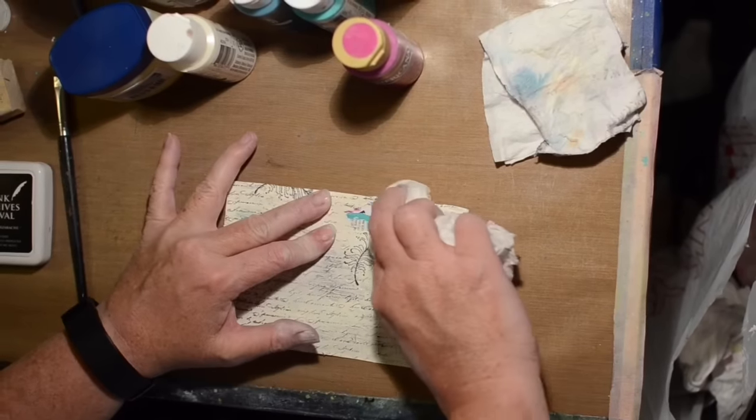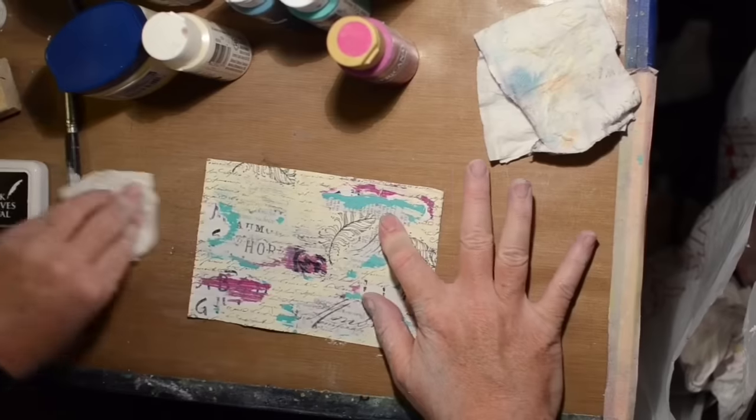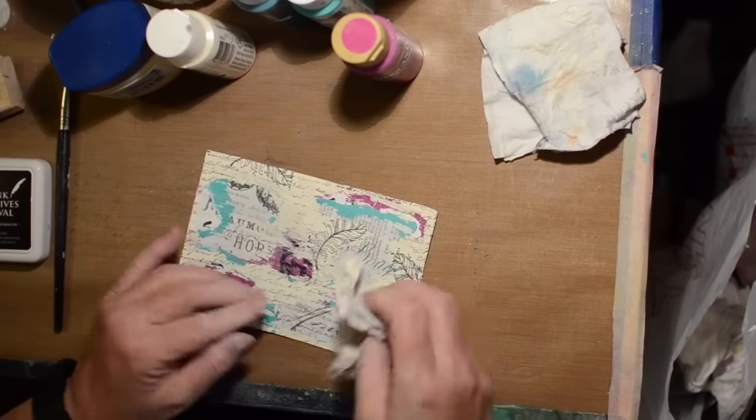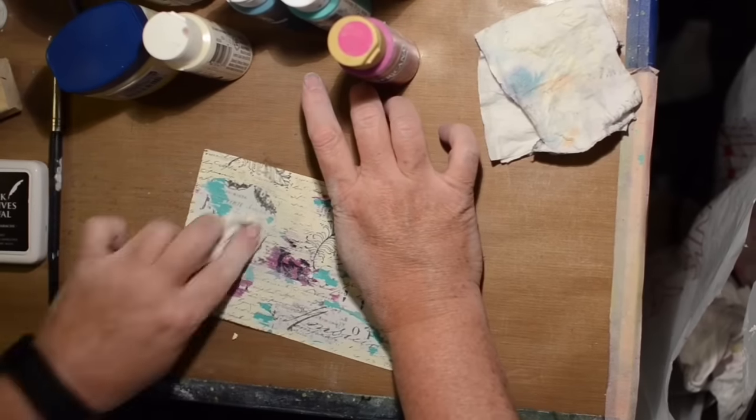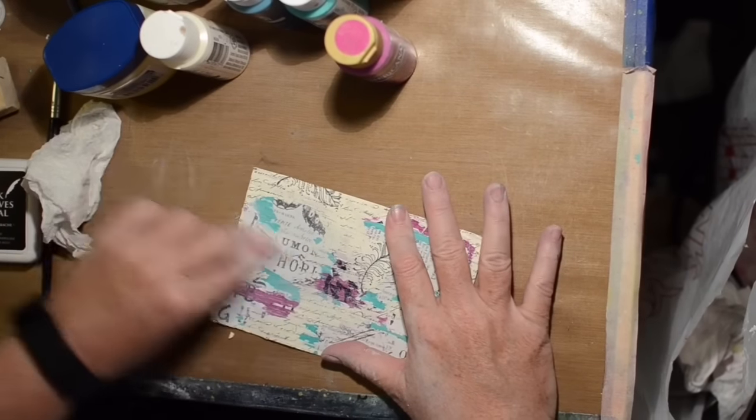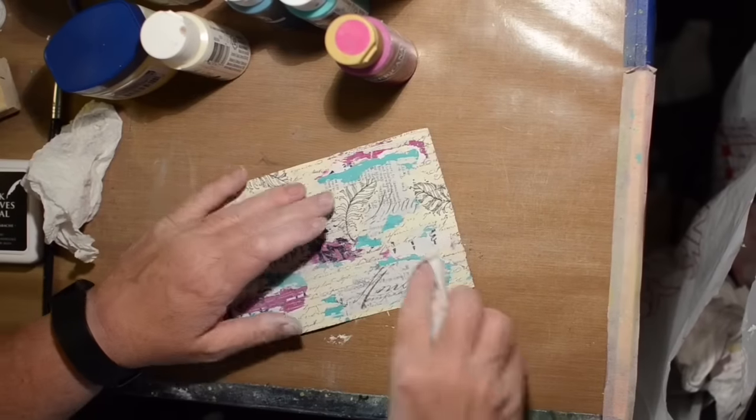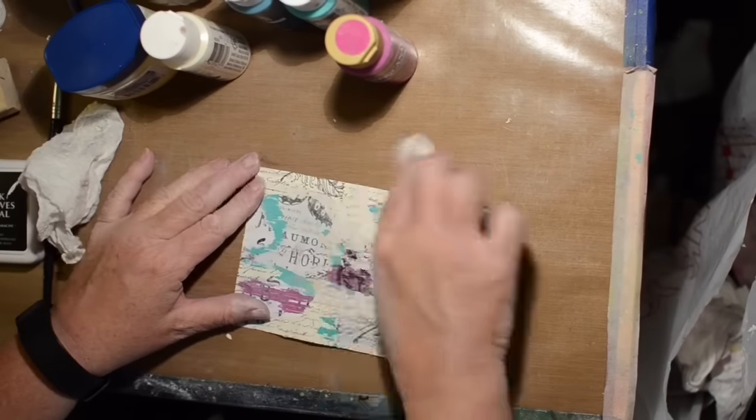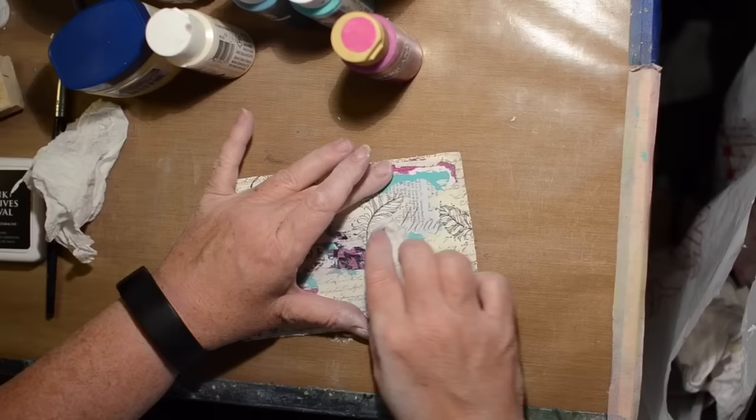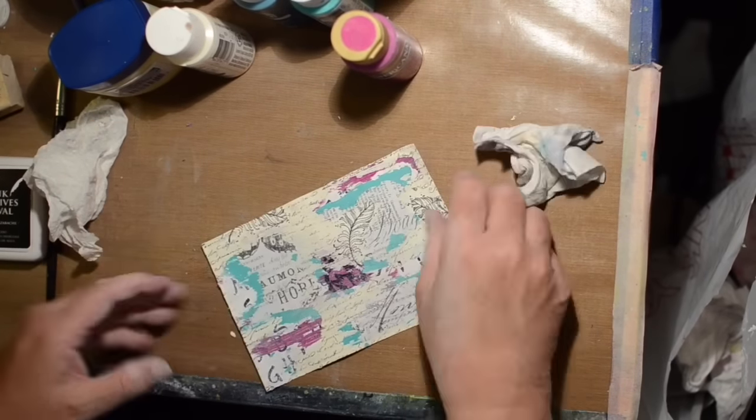Now, once it's dry, we'll rub it off. And that is Ranger's Archival Ink, by the way, that I'm stamping with. And you make sure it's very dry before you do this or you'll just smear the ink. Now I'm going through with a baby wipe and cleaning up the areas.